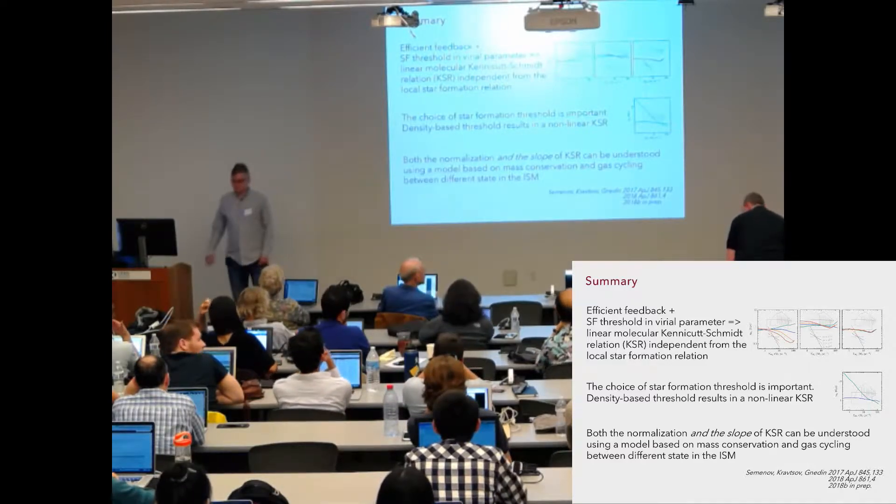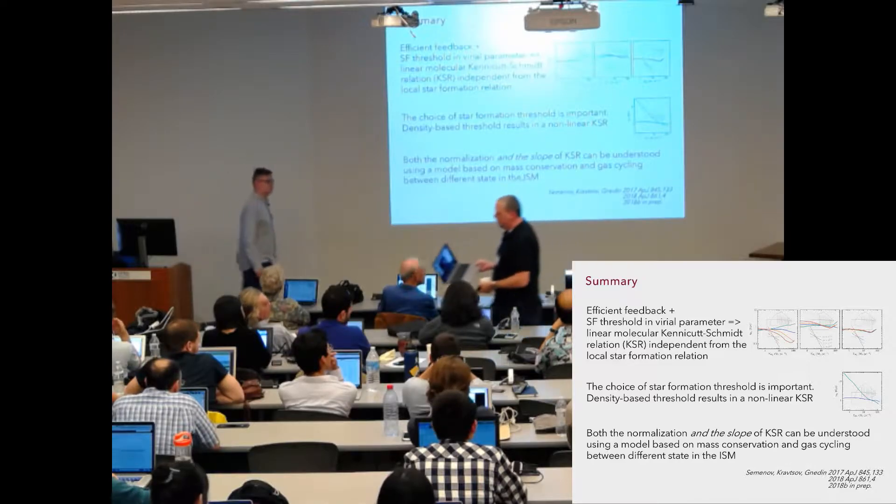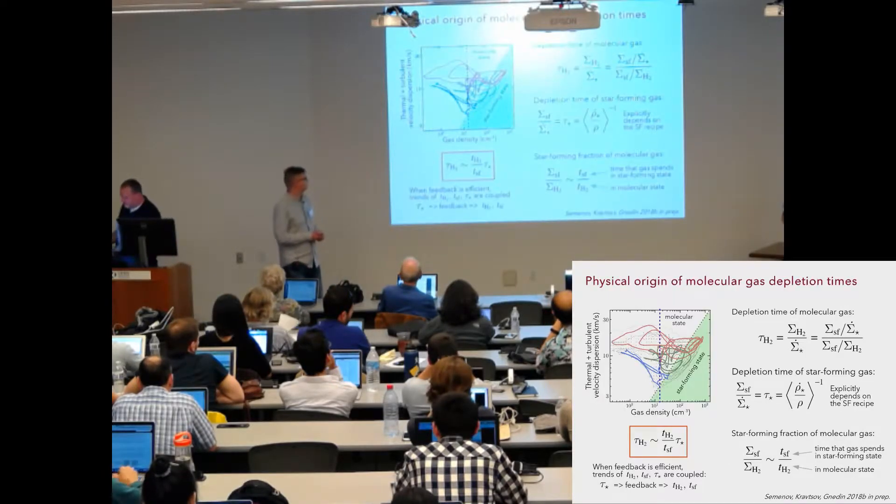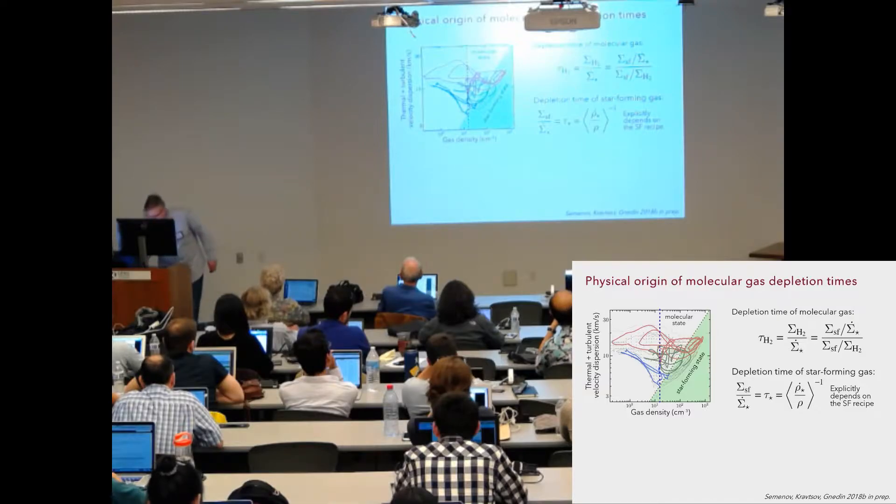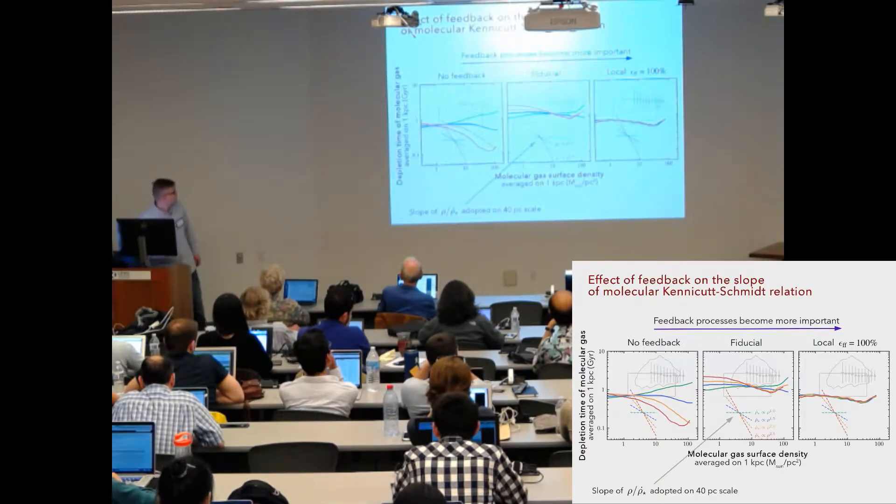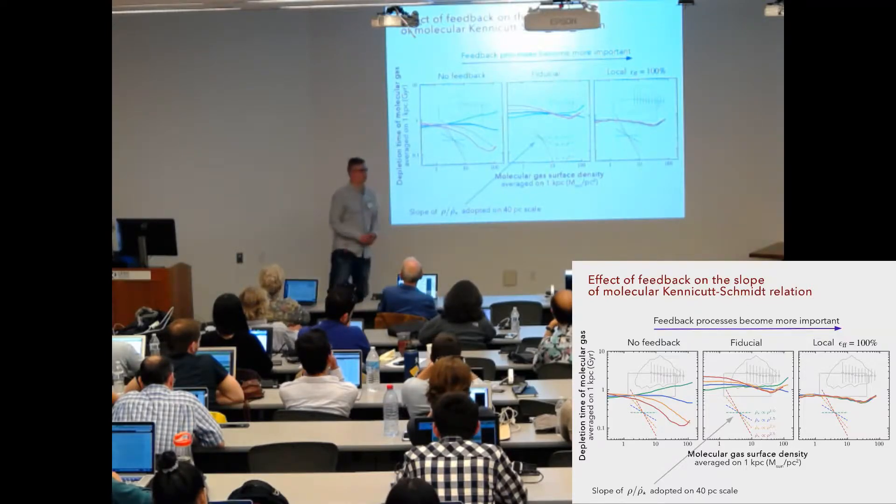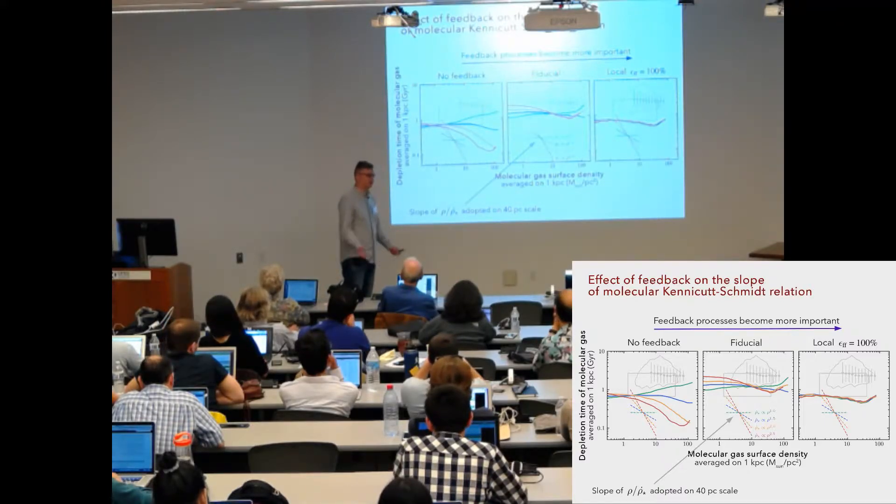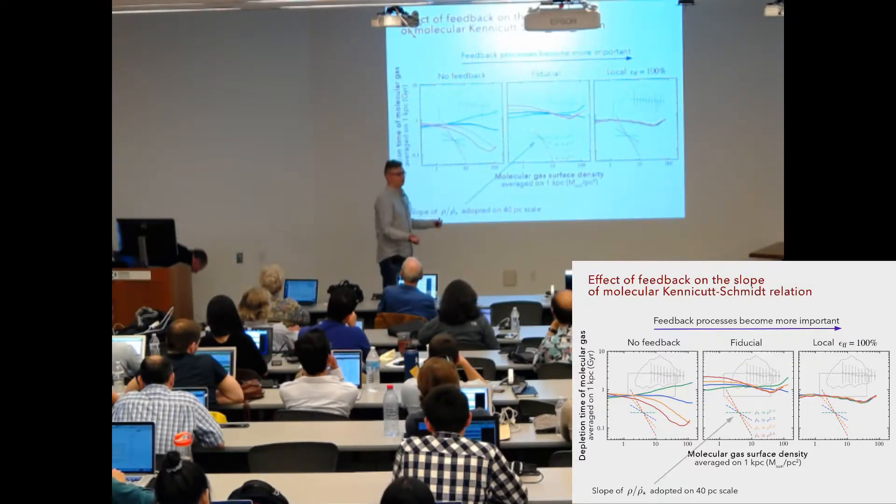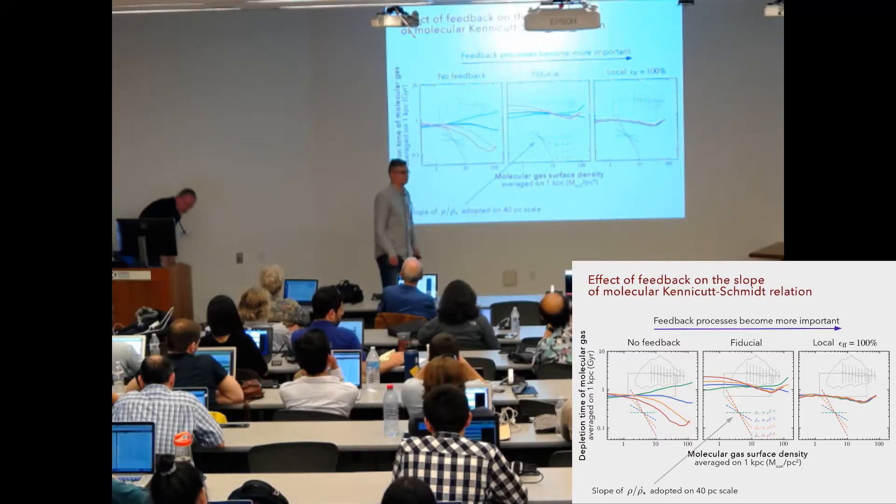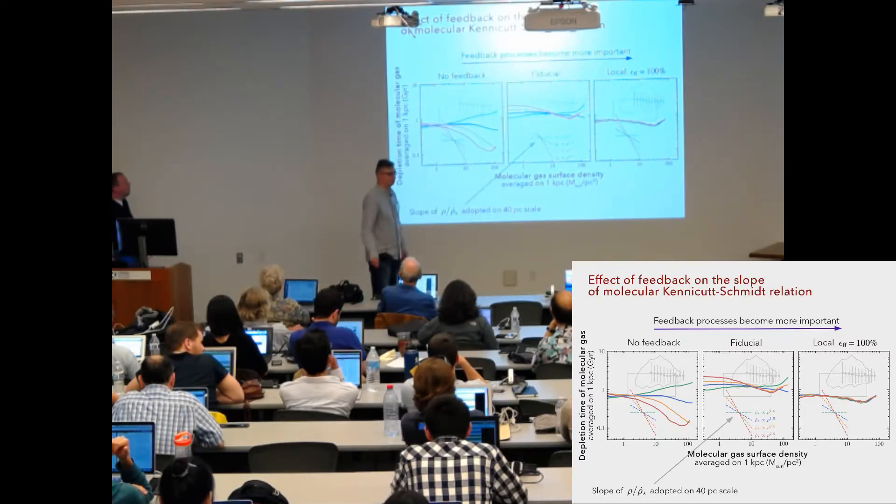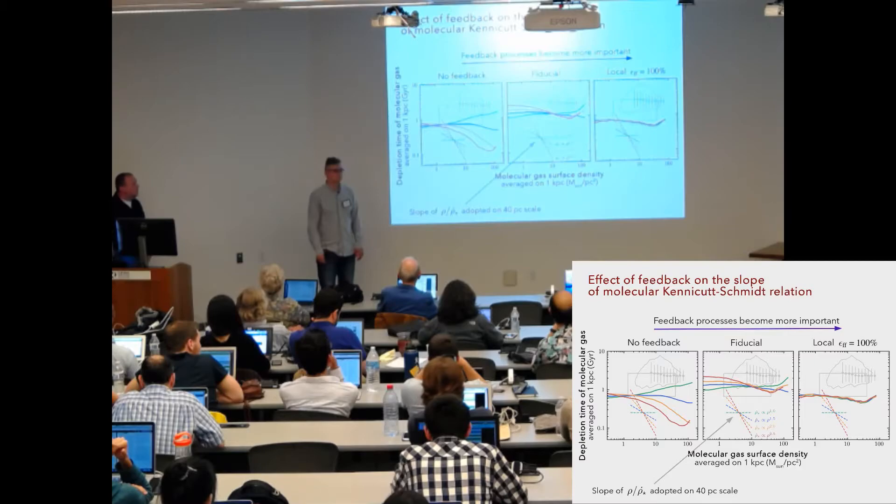Question for Vadim. Yes. So the reason is that it's not only feedback which destroys star forming and molecular regions, it's also dynamical effects like gas leaving spiral arms and expanding, or differential rotation in the disk. And in this case these effects dominate the cycling of the gas in the ISM. They control the global depletion time. Another question? If not, let's thank Vadim again.